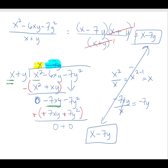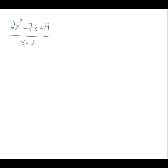You might be asking why you'd ever use long division — it's a lot of steps. But sometimes your numerator is not factorable, and then you need a method to fall back on. Long division is that method. Here's another problem: (2x² - 7x + 9) divided by (x - 2). You can try to factor it and see it's not factorable. Therefore, our only recourse is long division: (x - 2) divides into (2x² - 7x + 9).